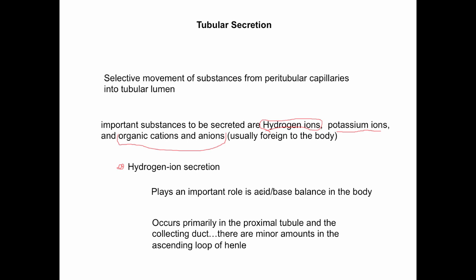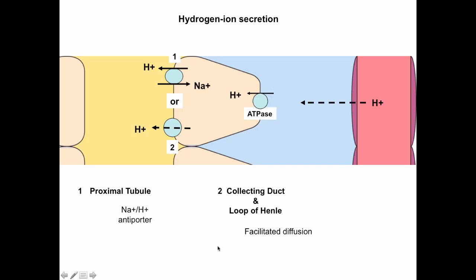Hydrogen ion secretion plays an important role in acid-base balance in the body — it's an opportunity for the body to get rid of acid. It occurs primarily in the proximal tubule and in the collecting duct, with just a minor amount happening in the ascending limb of the loop of Henle.